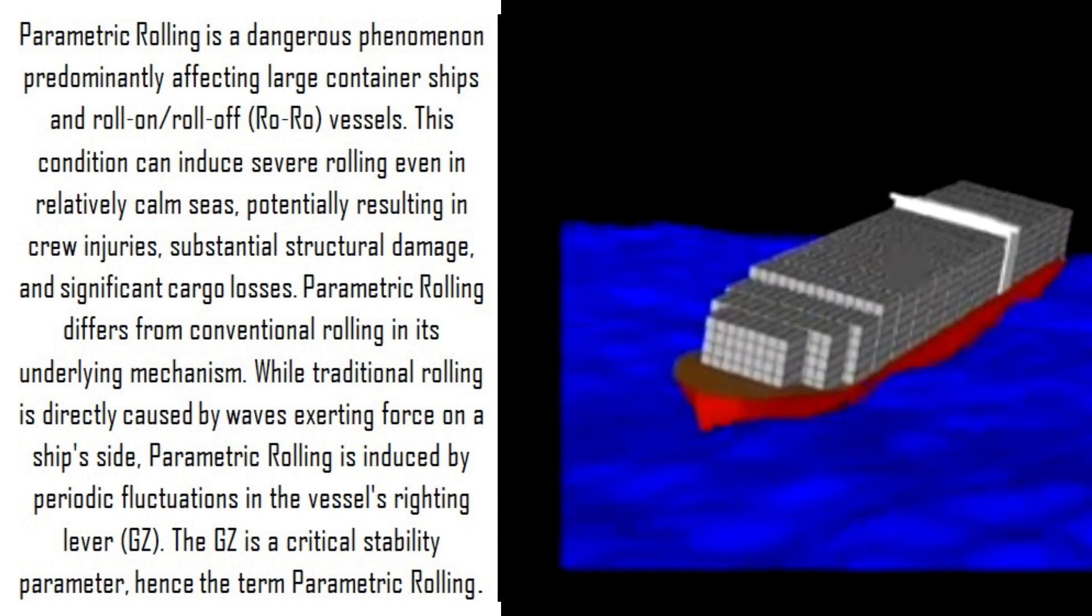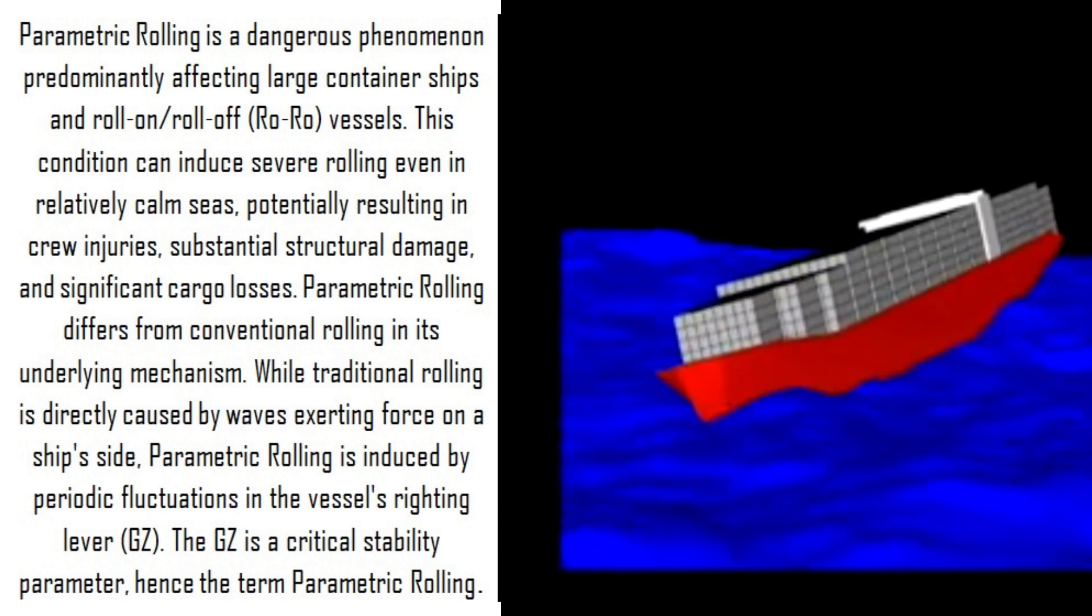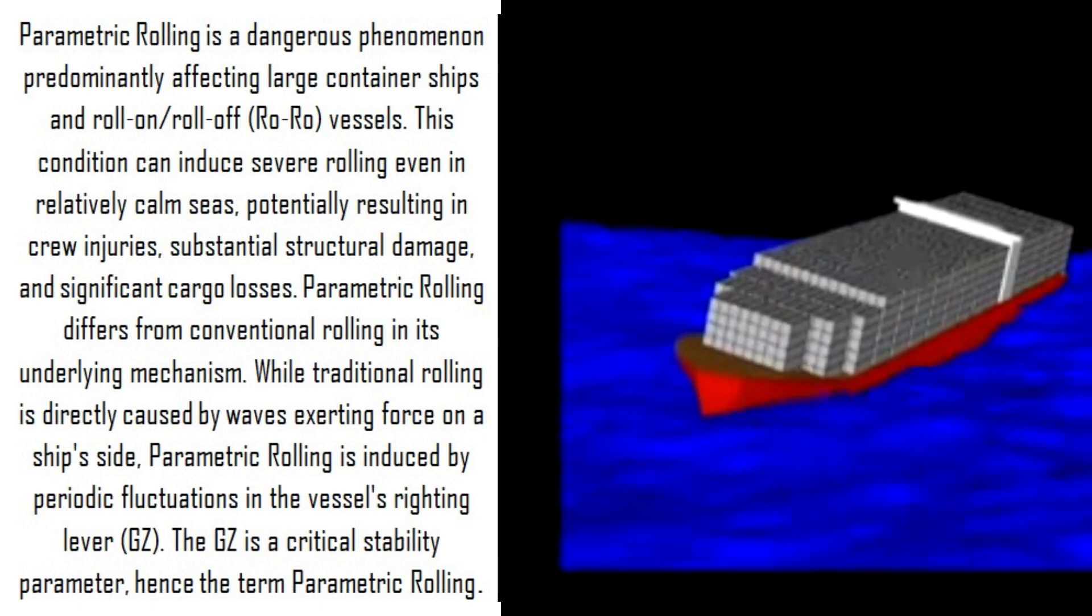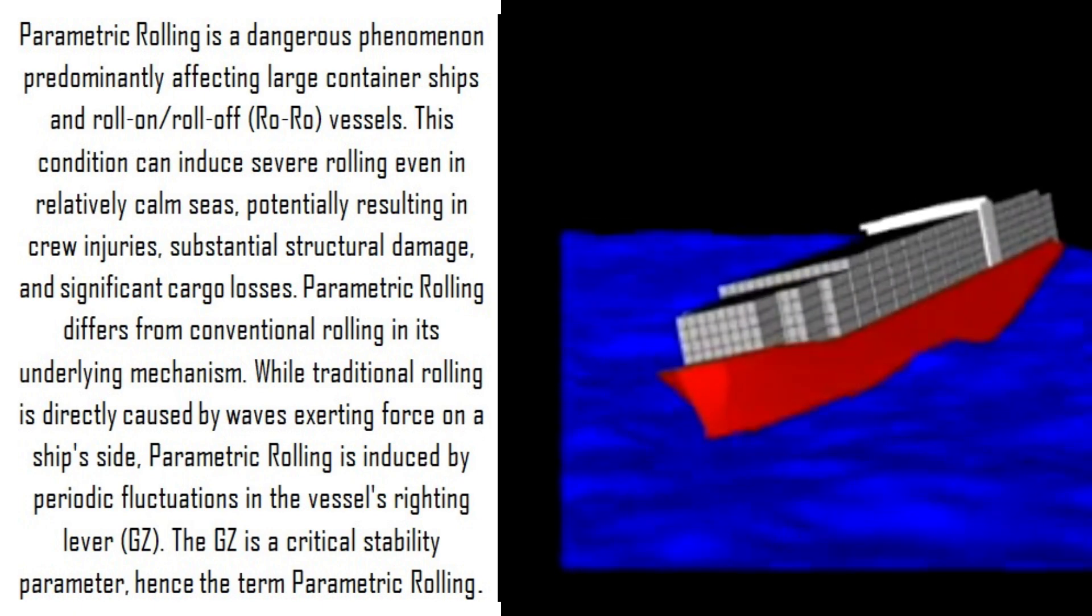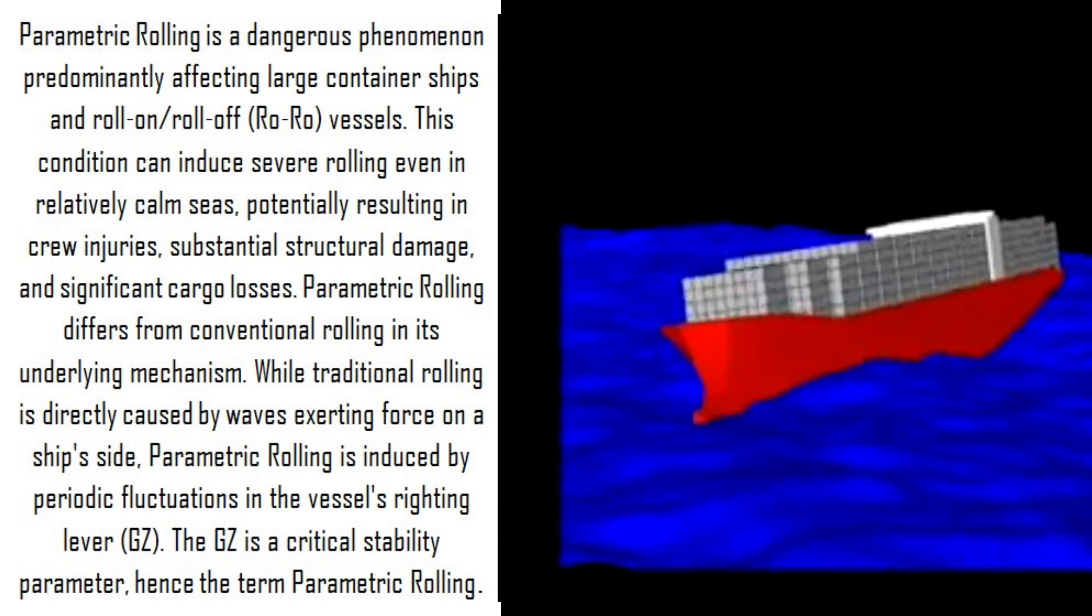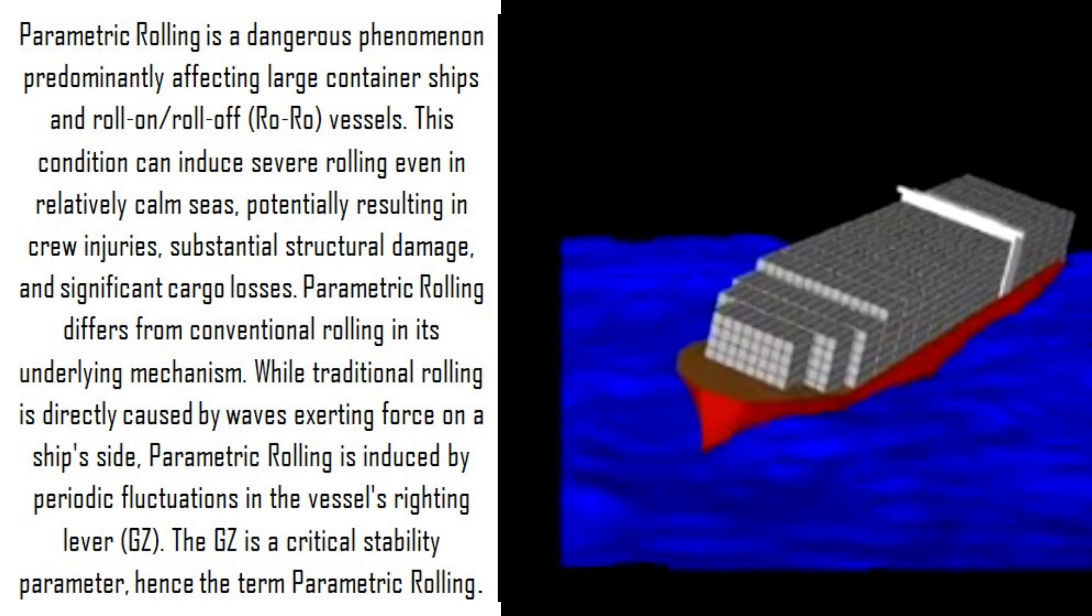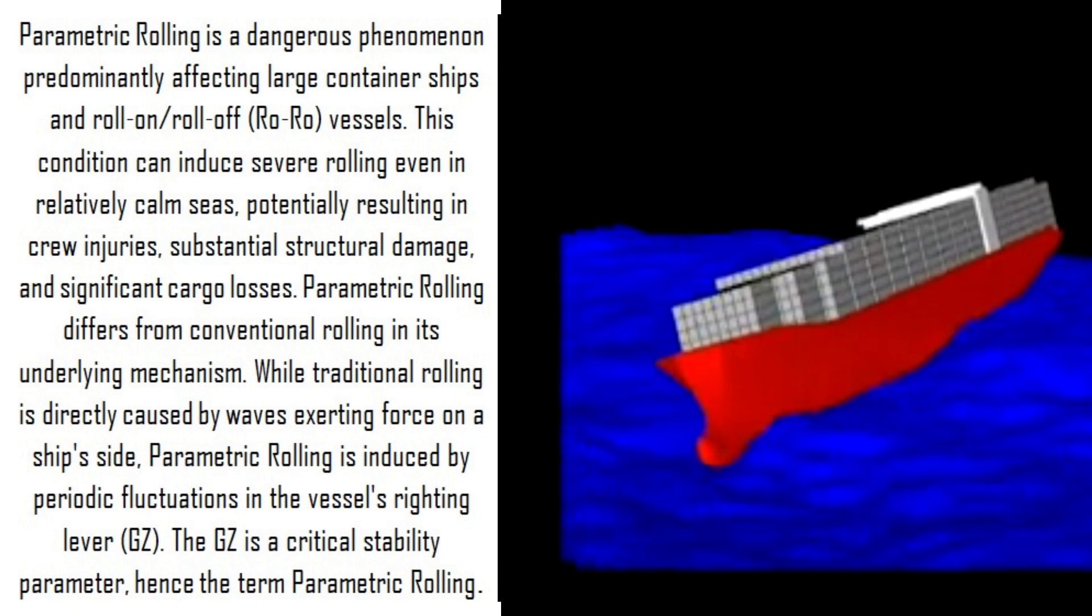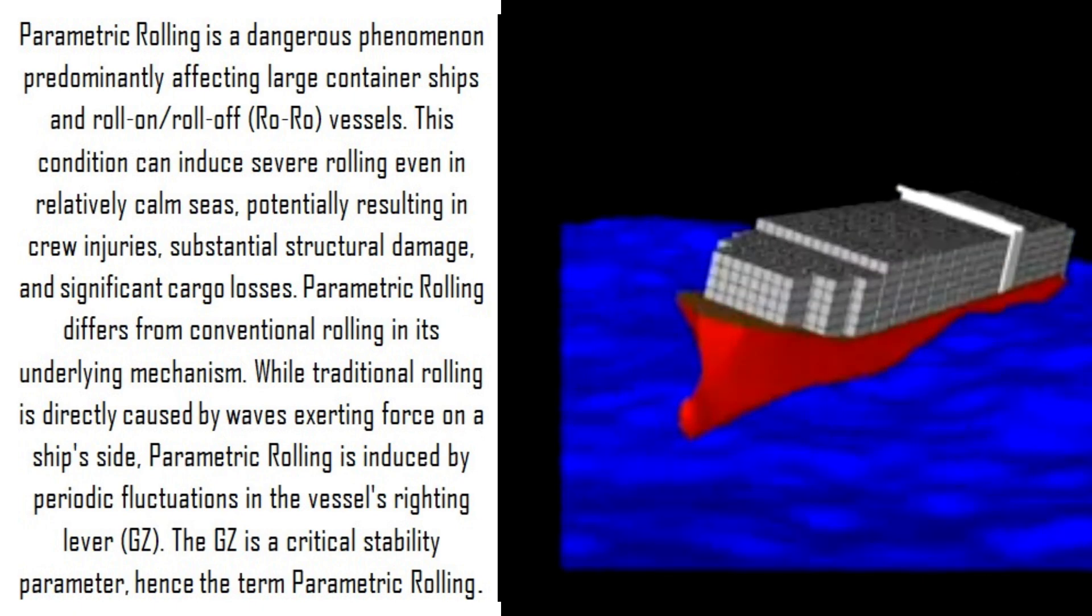Parametric rolling differs from conventional rolling in its underlying mechanism. While traditional rolling is directly caused by waves exerting force on a ship's side, parametric rolling is induced by periodic fluctuations in the vessel's righting lever GZ. The GZ is a critical stability parameter, hence the term parametric rolling.